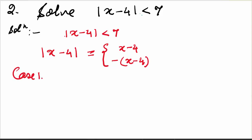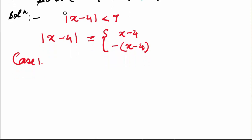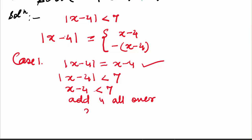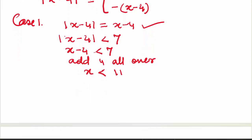So let's come to case 1. In the first case, we have mod of x minus 4 equal to x minus 4. Come to your question, which was mod of x minus 4 is less than 7. Now replace mod of x minus 4 by x minus 4. This gives me x minus 4 is less than 7. Add 4 all over, and we will get x is less than 11. So we have got one part of the question.